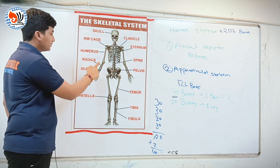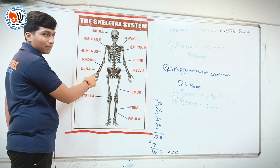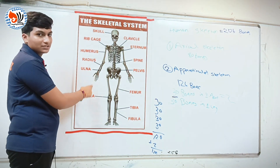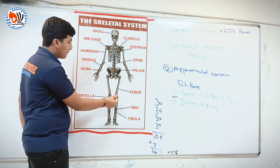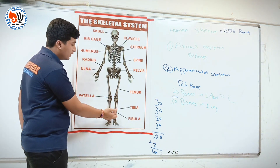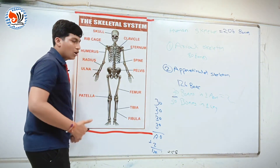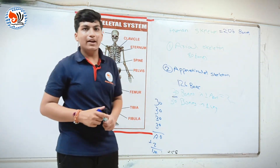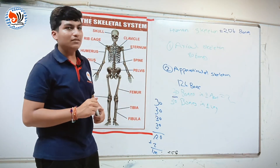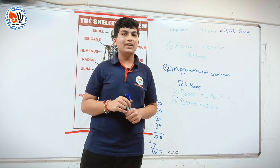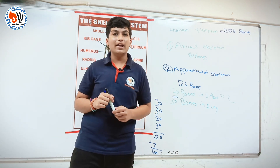To summarize the bones: humerus, radius, ulna, carpals, metacarpals, phalanges in the arm; and femur, patella, tibia, fibula, tarsals, metatarsals, phalanges in the leg. This completes our topic on the human skeleton. We will meet in the next video. Thank you.